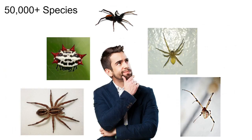Now we have a daunting task ahead of us. Currently there are over 50,000 different species of spiders recognized by the World Spider Catalog, and that is a lot of animals to learn. That is why I am building this guide — to go through strategies that will make this a lot easier. There is no reason to ever memorize over 50,000 species; we are going to fold them into nice little groups.